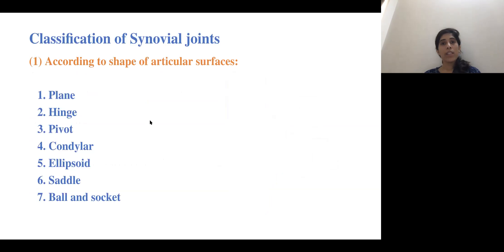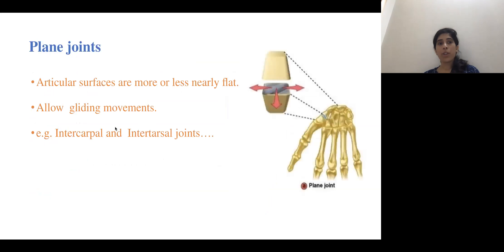Synovial joints include plane, hinge, pivot, condylar, ellipsoid, saddle, and ball and socket joints. In the plane joint, articulating surfaces are more or less flat. Intercarpal and intertarsal joints are examples of plane joints.